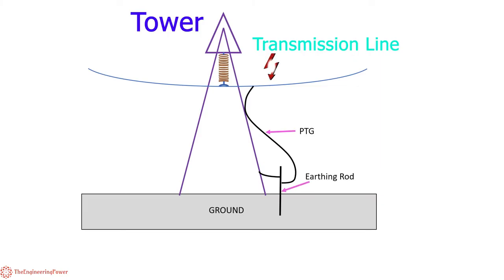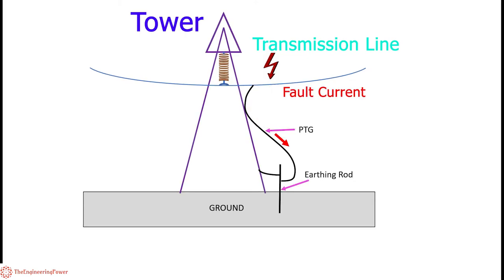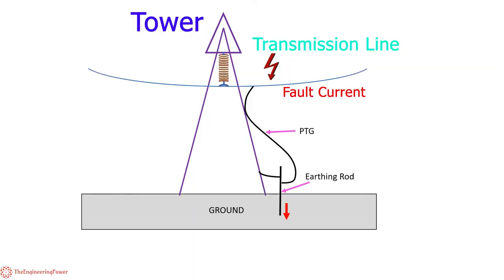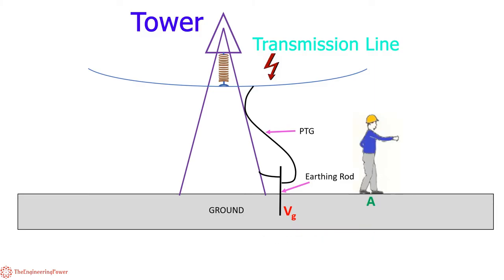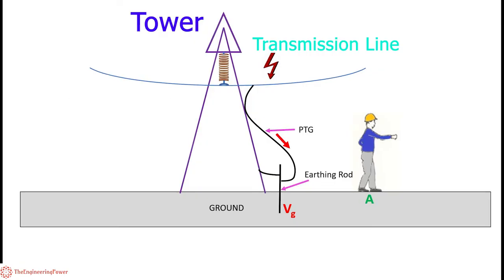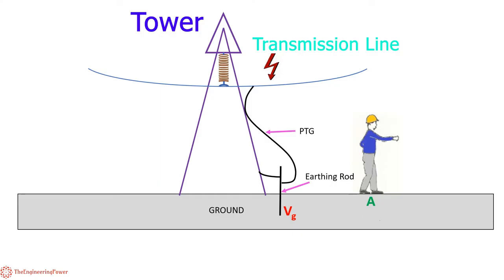Now in case of a ground fault on a transmission line due to any reason, the fault current will flow to the ground through the PTG and the ground voltage rises. This voltage decreases as we move away from the ground rod in any direction due to the earth resistance. Consider a person standing at point A. Now, in absence of bonding, if a ground fault occurs, the person at point A will be at different potential than the ground potential at throw.